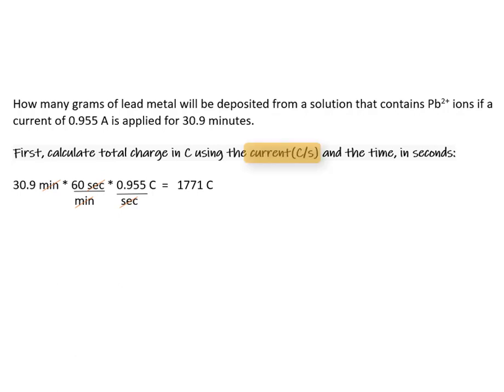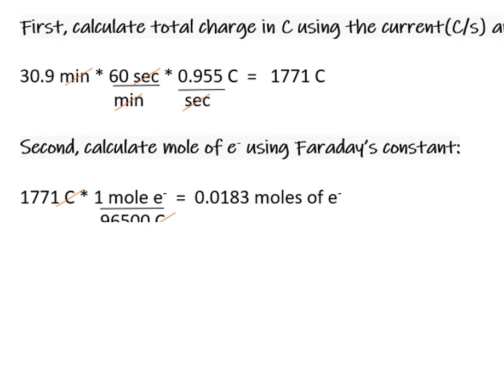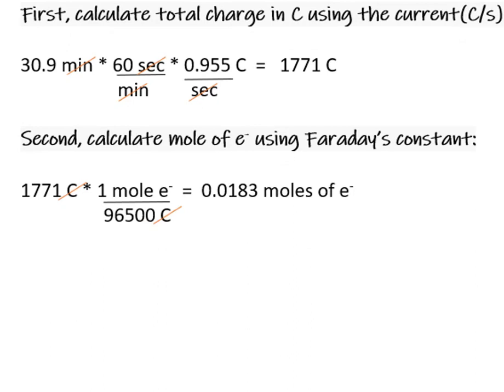Current is in the units of coulombs per second. So we multiply the coulombs per second by the total number of seconds in 30.9 minutes, and we end up getting 1771 coulombs. Next, we calculate the moles of electrons using Faraday's constant, giving us 0.0183 moles of electrons.